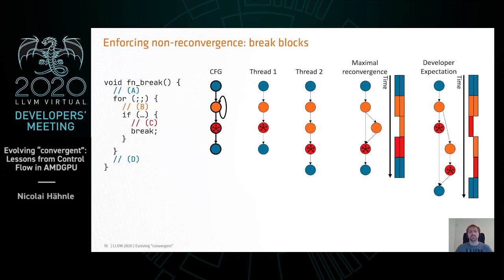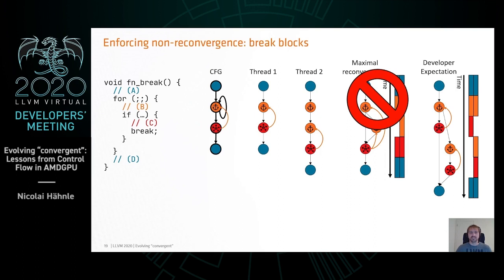It's an if-and-only-if, which has an interesting implication for the break block example. In recap: a loop with a break block and two possible implementations — one with maximal reconvergence and one that's probably what the developer expected. We can put an anchor inside the loop and refer back to it. In the maximal reconvergence picture, the convergent operation would refer back to two different dynamic instances of the anchor — but it was an if-and-only-if, so that's forbidden. This enforces the developer's expected behavior.